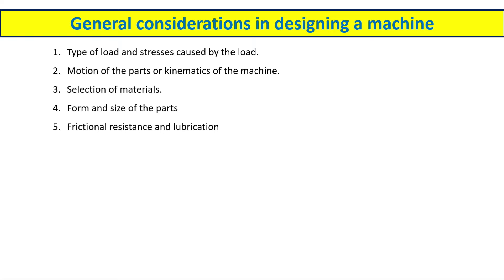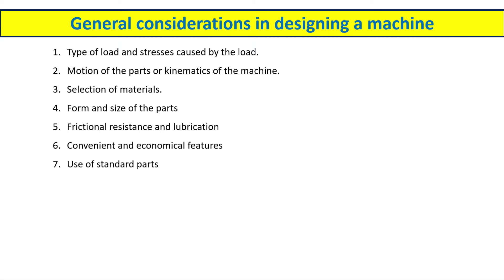Another consideration is frictional resistance and lubrication. During working conditions, we need to account for frictional resistance and decide which type of lubricant to use to avoid friction. We also need to consider convenient and economical features — the required features should be accommodated in the design with no undercuts, minimum molds, and the part should be easy to manufacture.